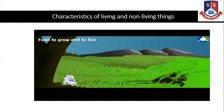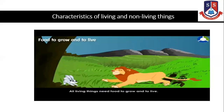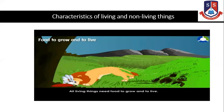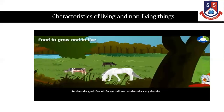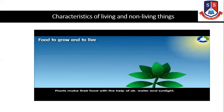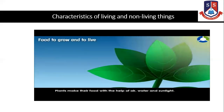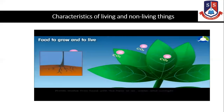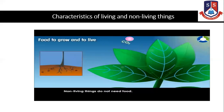Food to grow and to live. All living things need food to grow and to live. Animals get food from other animals or plants. Plants make their food with the help of air, water and sunlight. Non-living things do not need food.